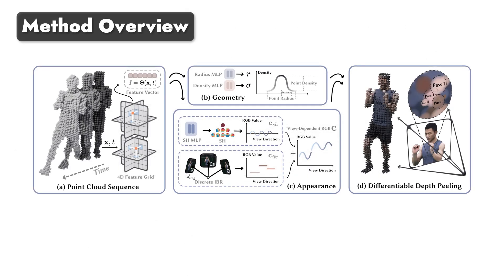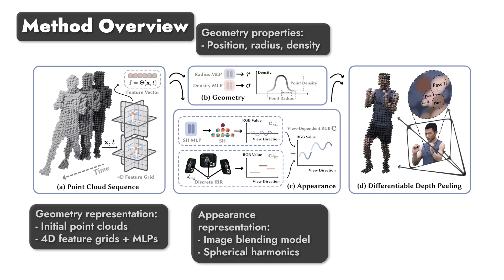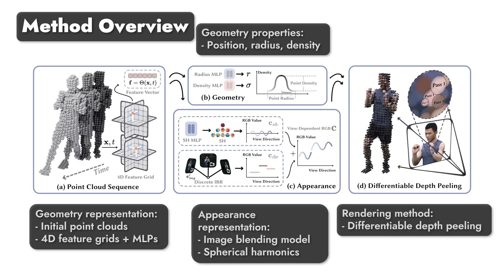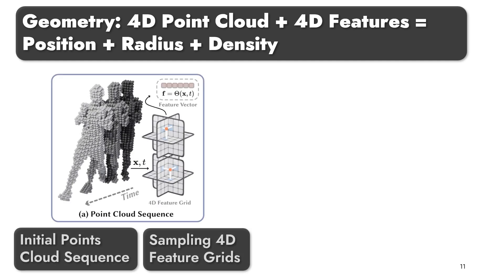The overview of the proposed model is presented in the figure. We first describe how to represent the geometry and appearance of dynamic scenes based on point clouds and neural networks. Then we develop a differentiable depth peeling algorithm for rendering our representation, which is supported by the hardware rasterizer, thereby significantly improving the rendering speed. Finally, we discuss how to optimize the proposed model on input RGB videos. Given the coarse point clouds of the target scene, we represent its dynamic geometry and appearance using neural networks and feature grids.